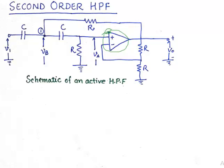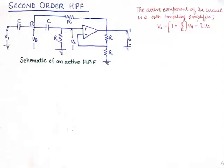We will go into the discussion that the active component of the circuit is a non-inverting amplifier. We know that this is the active component and for this part of the circuit V0 comes out to be twice of VA.